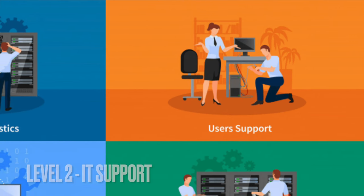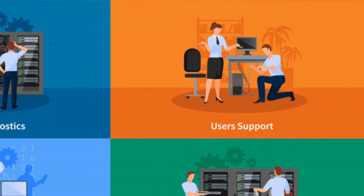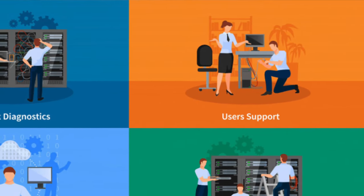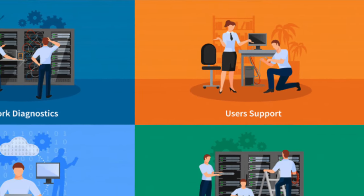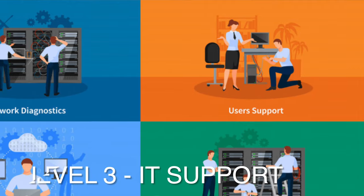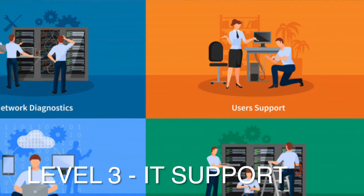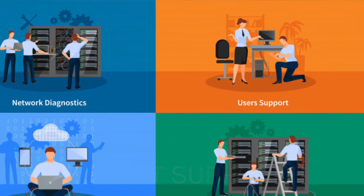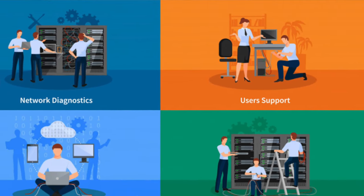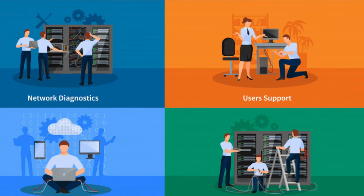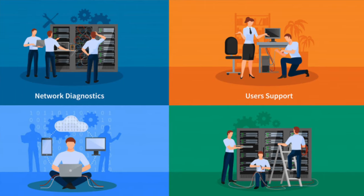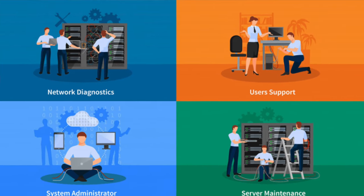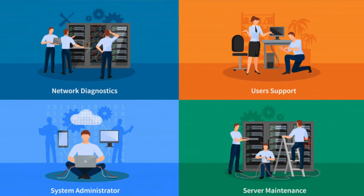Then moving into more of a level two position, you've got somebody who is a little bit more senior — more like a desktop or technical sort of person. You then move into level three, and level three are people who are your system admins, engineers, network people — people who have that administrator or engineer badge.